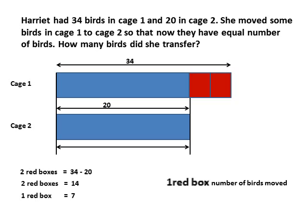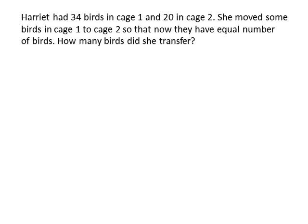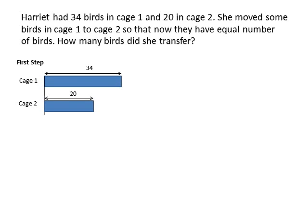When you do your work on paper, you show that. Here is how you present this problem. As I mentioned, there are two steps. The first step is to draw the figures — the boxes represented by the problem. You have cage 1 with 34 and cage 2 with 20. Make sure they start on the same line. You can see a vertical line there — mark the 34 and the 20.